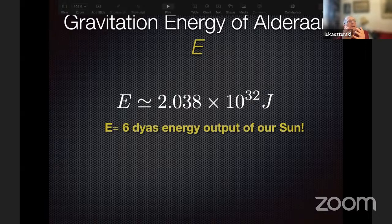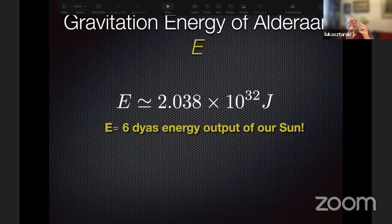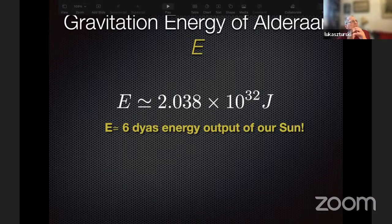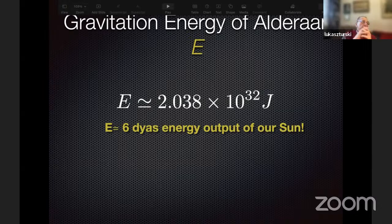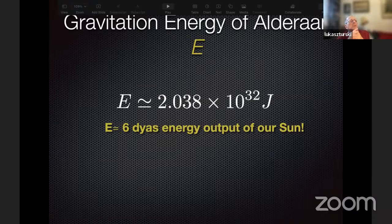It is easier to appreciate the values of various quantities if you can compare them to something which is less abstract than power 32 of joules. That energy, 2 times 10 to the 32 joules, is roughly the energy which is a six-day output of the radiation energy of our Sun.